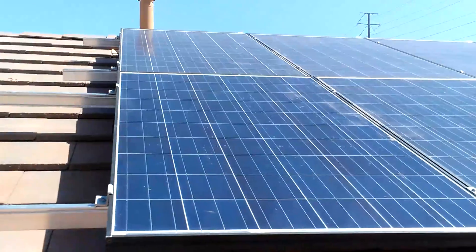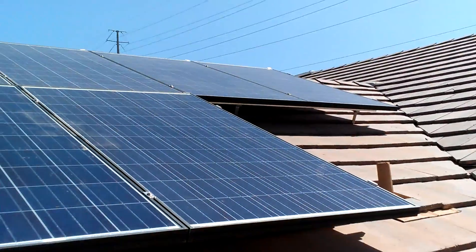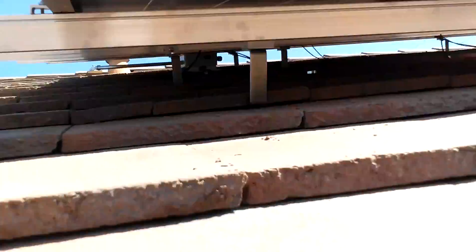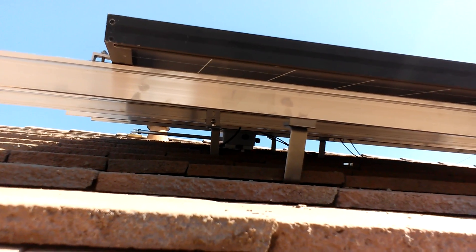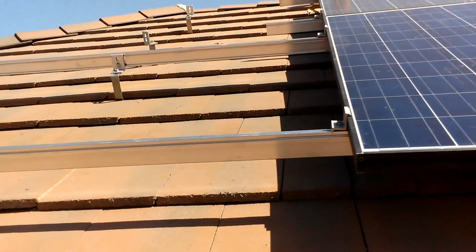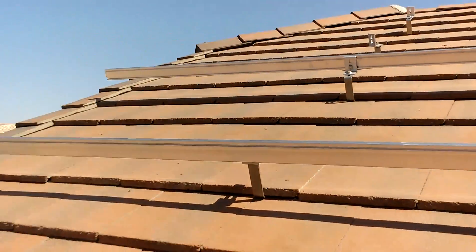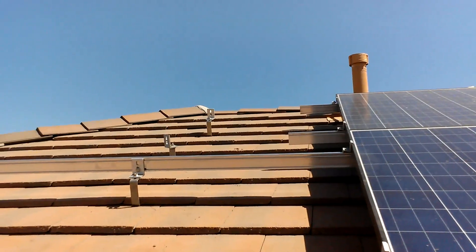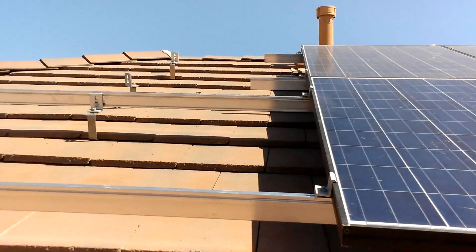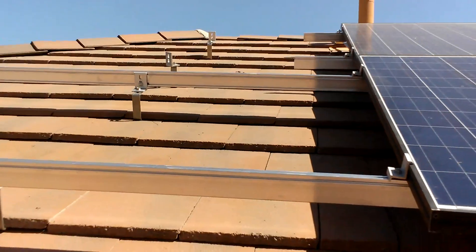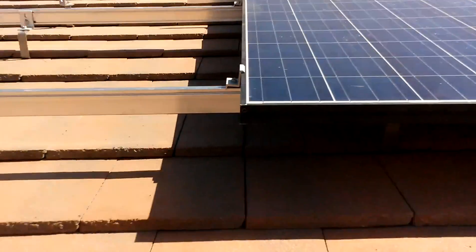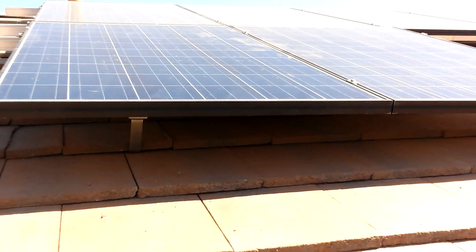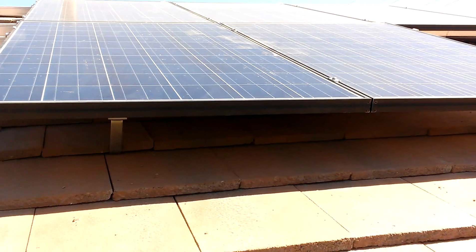Here are the six panels I put up on the house. You can see underneath there's the combiner box. Right now I've got UNI rack rail, and the tile hooks you can see right there - they just go underneath the tile. These are 260 watt Canadian solar panels.